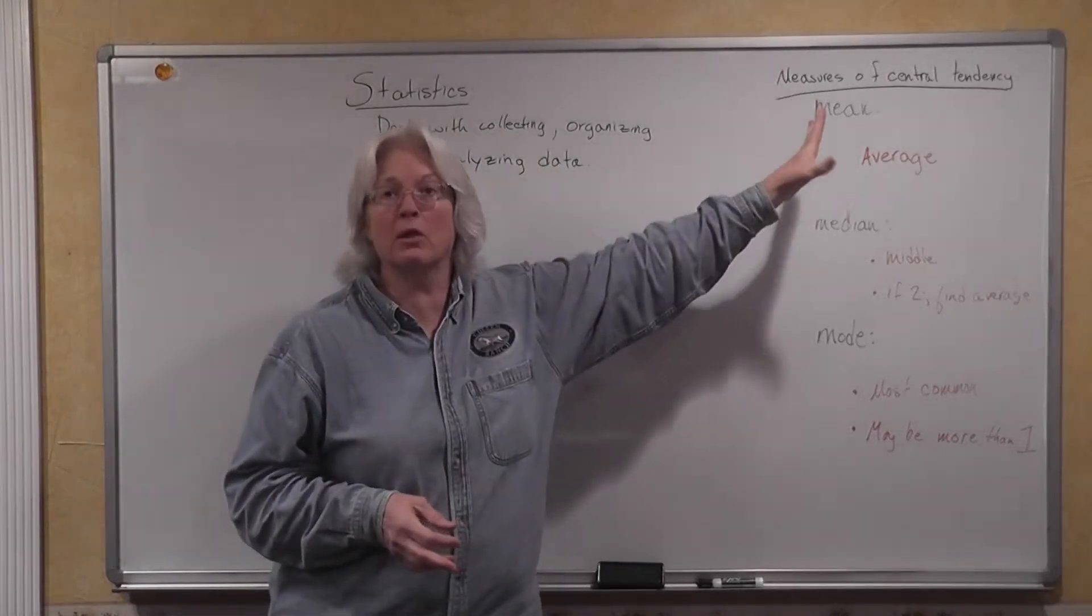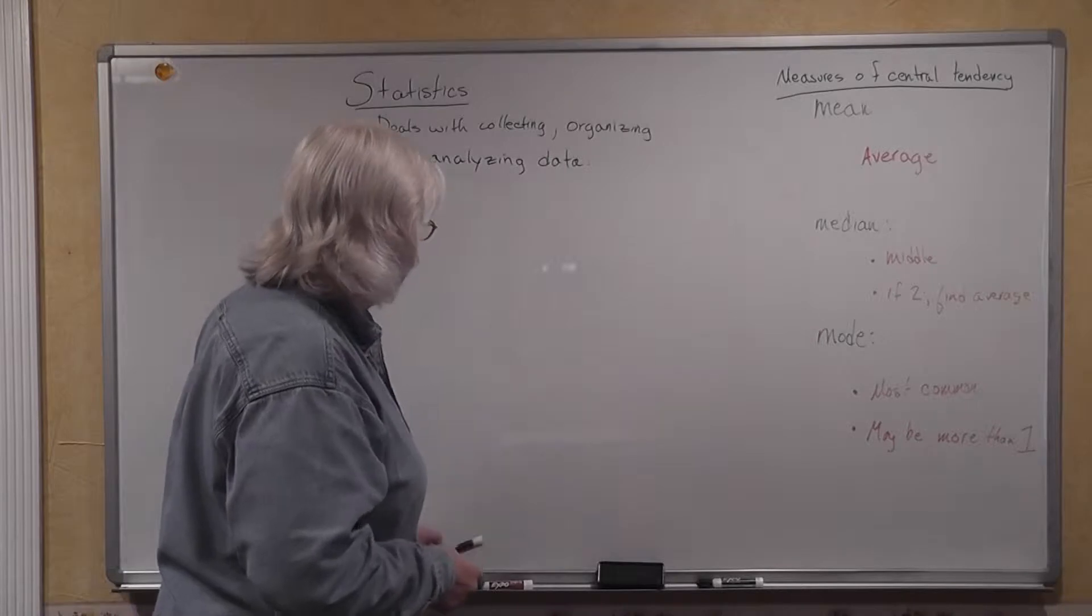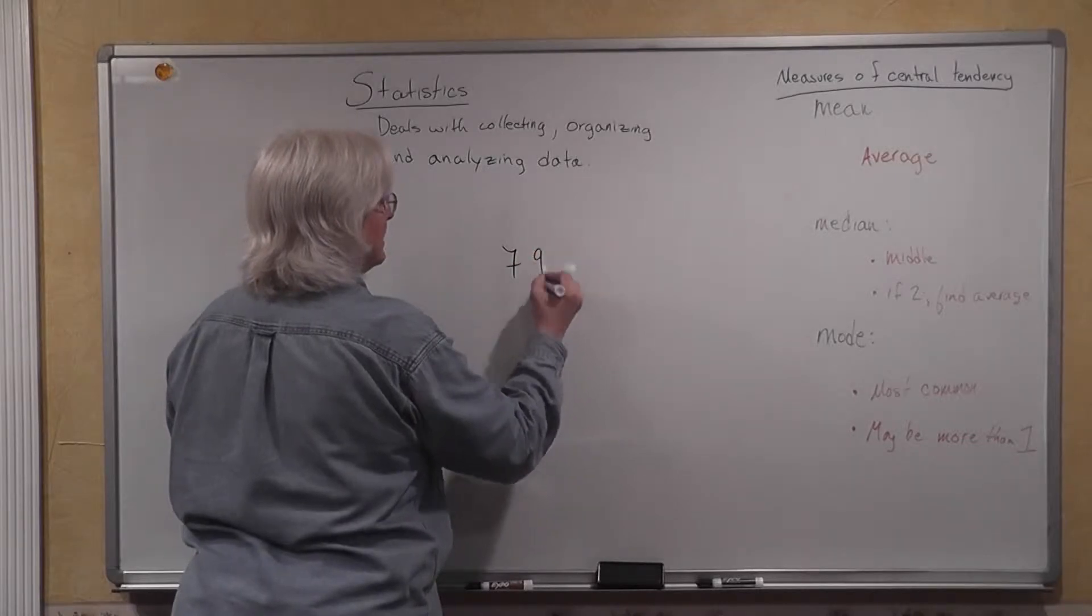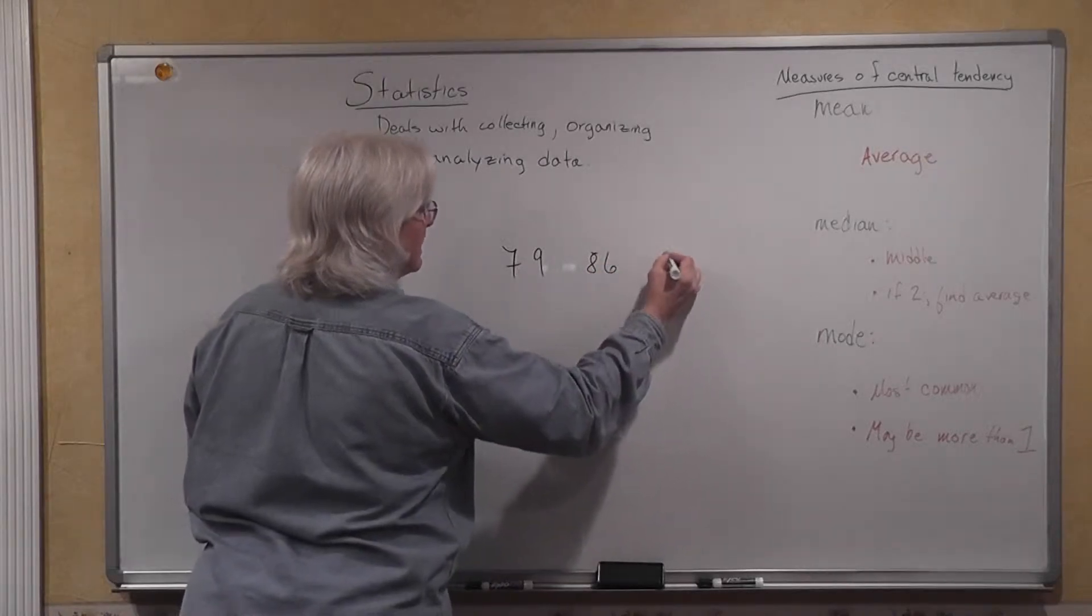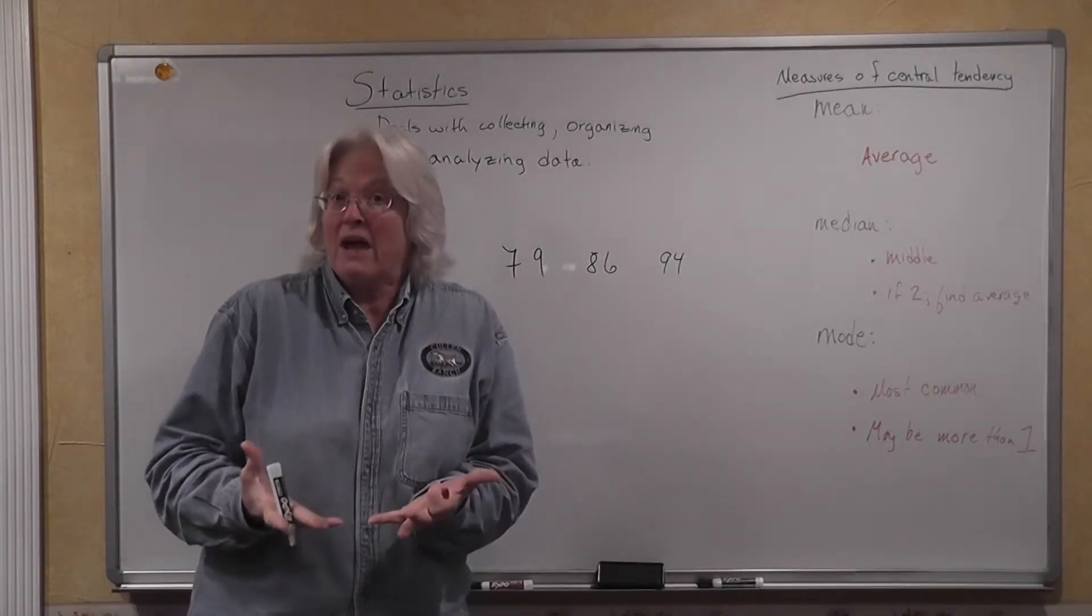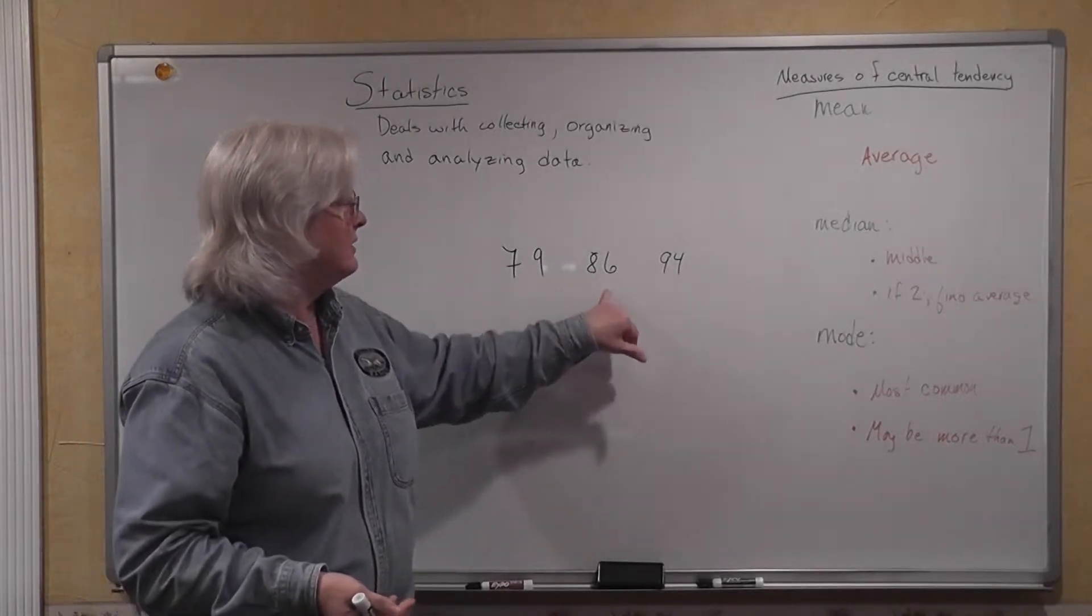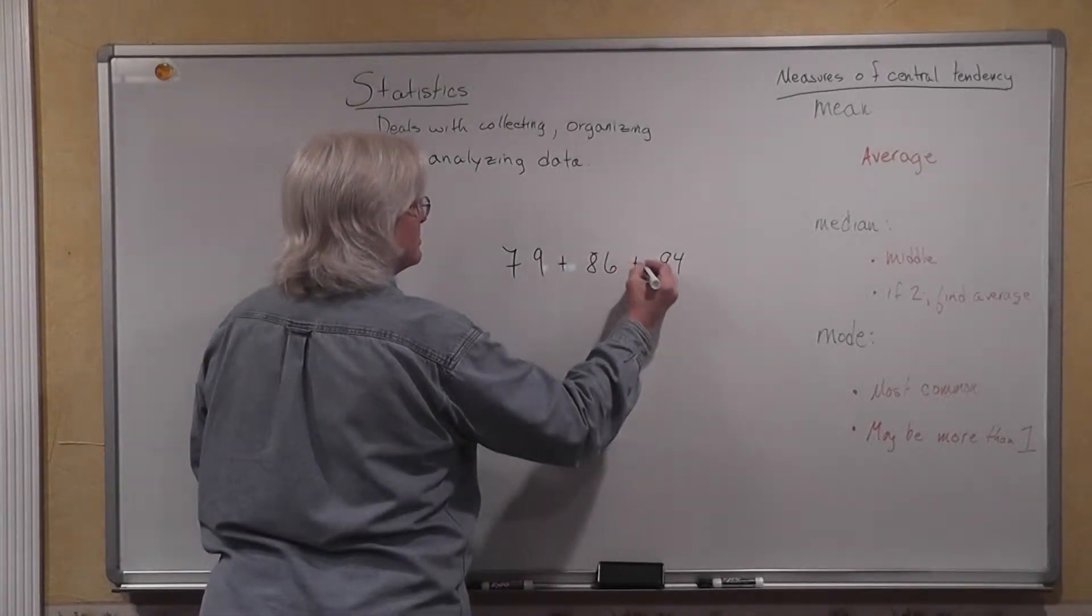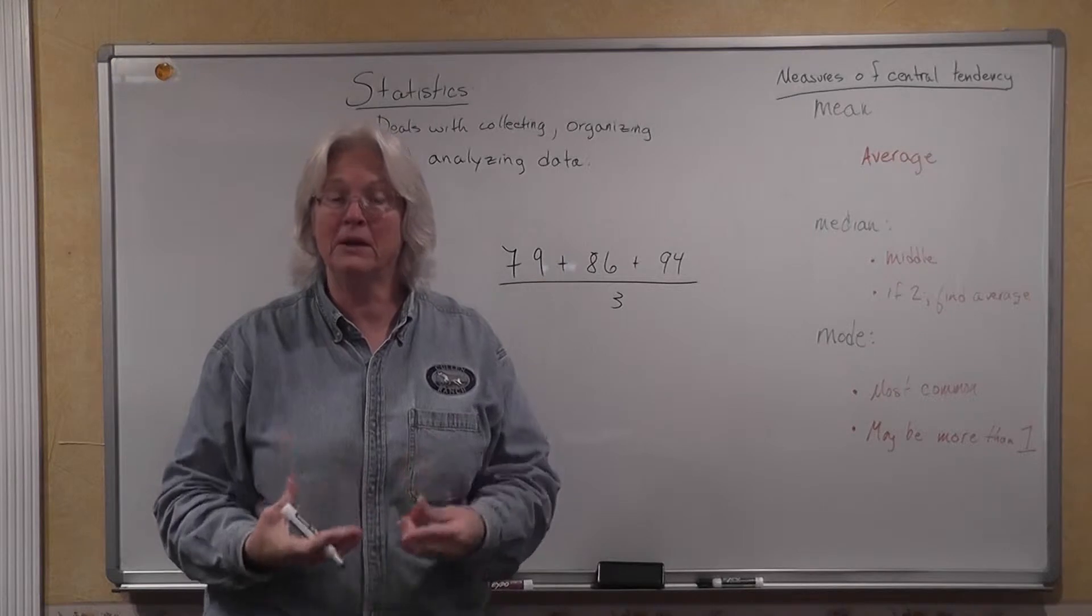But what the mean is, it's just another word for average. If you're trying to calculate what your average is in a class that you're taking, and you know that you have taken three tests, and you got a 79, and you had an 86, and then you studied really hard and you got a 94 on your last test, and you wanted to figure out what your average would be of those three classes, all of you, I would expect to know that the way to find the average of 79 plus 86 plus 94 would be to add those three numbers together and divide by three. And that's all a mean is. A mean is an average.